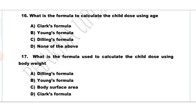Question number 16. What is the formula to calculate the child dose using age? Option A: Clark's formula, Option B: Young's formula, Option C: Dilling's formula, Option D: None of the above. The answer is Option B, Young's formula, which uses age to calculate the dose.